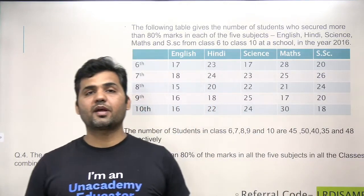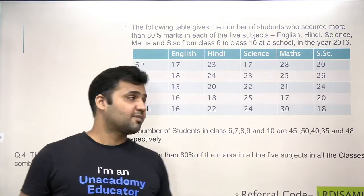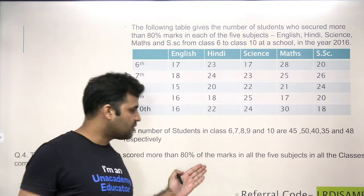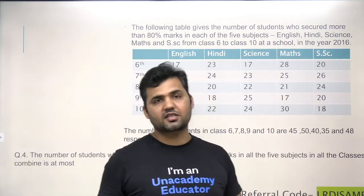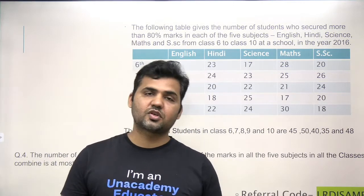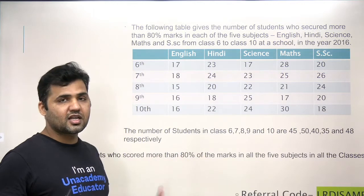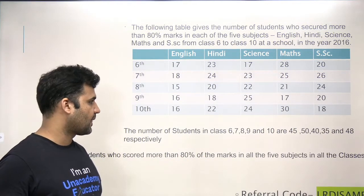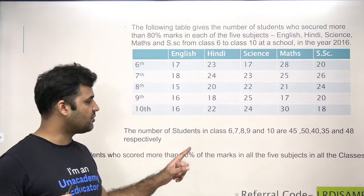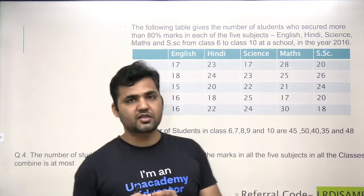Hello everyone. Welcome to LREA Prep. In this video, we are going to understand the concept of finding the number of students getting more than 80% in all five subjects — and what is the difference in the concept from the previous question. We will discuss this, and if the previous approach doesn't work, we will discuss the reason, so that you have better conceptual clarity of this complete concept.